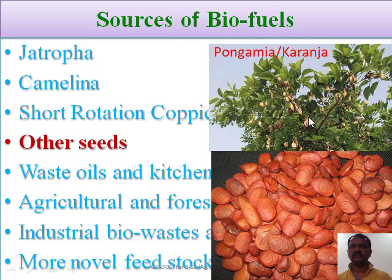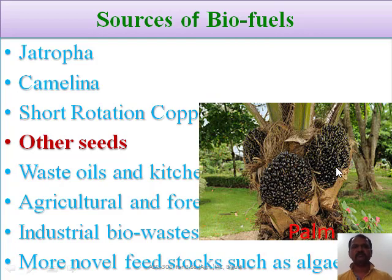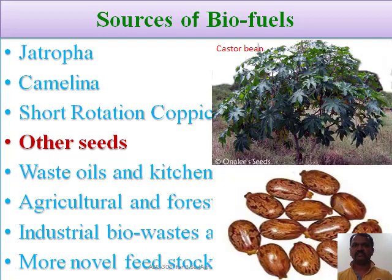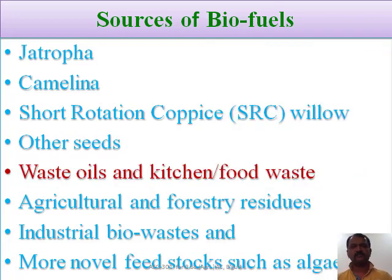Here is the Pongamia or Karanja plant. From this plant the seeds will be extracted and after processing, biodiesel will be extracted from it. The next type of seed used for production of biofuel is palm. Then Libret, another plant whose seed will be used for extraction of the oil, and that oil will be further processed and biofuel extracted. Castor seed or castor can also be used for the extraction of biofuel. Other waste oils produced in the kitchen, households, or food waste after usage can be used for the production of biofuel, particularly biodiesel, after doing processing on it.